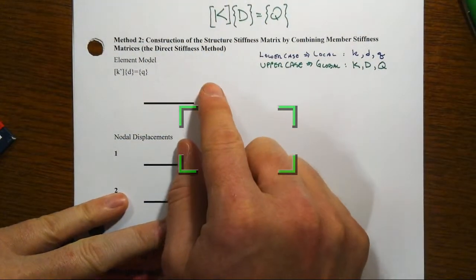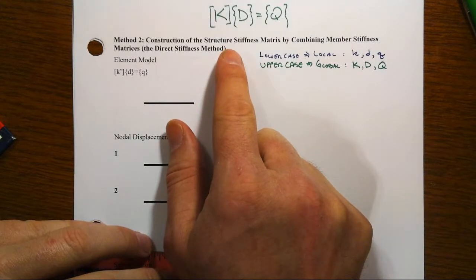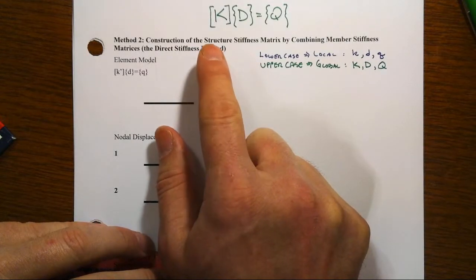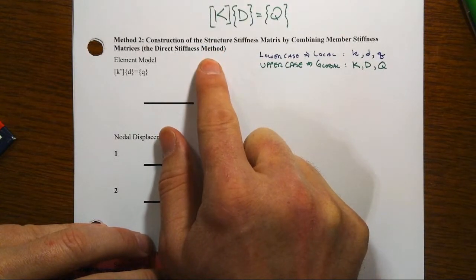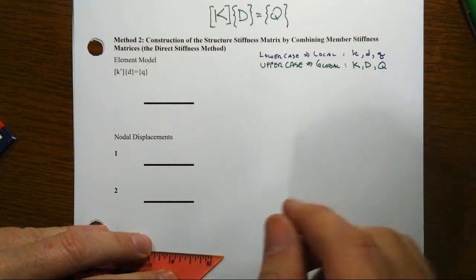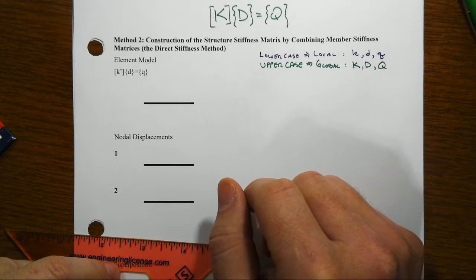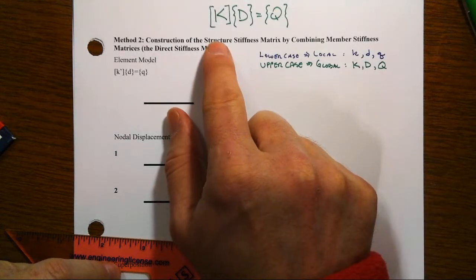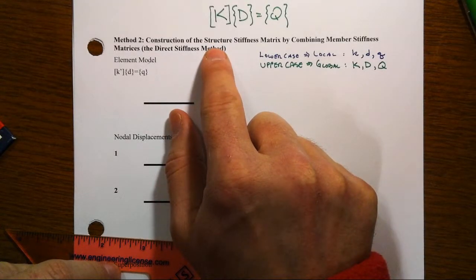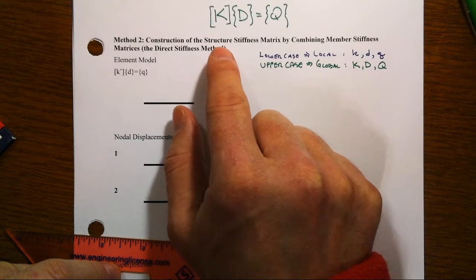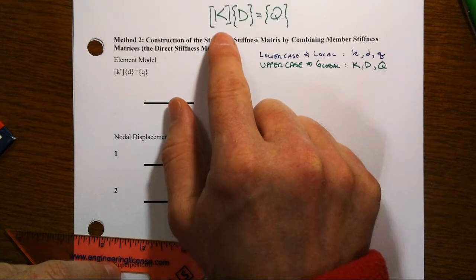Okay, so in the second method of creating the structure stiffness matrix by using the direct stiffness method, there's a bunch of things you really need to sort of keep in hand all at once, and it's helpful to have some sort of big picture of what we're really doing, because we're going to descend down into some nitty-gritty details here where the big picture could get lost real fast.